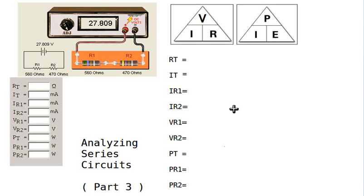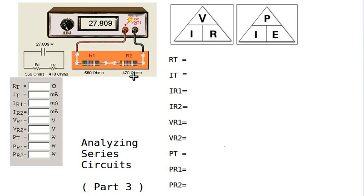Let's analyze a series circuit consisting of a power supply connected to two resistors connected end-to-end, or in series. Resistor 1 has a value of 560 ohms and resistor 2 has a value of 470 ohms, with a power supply producing 27.809 volts DC direct current.